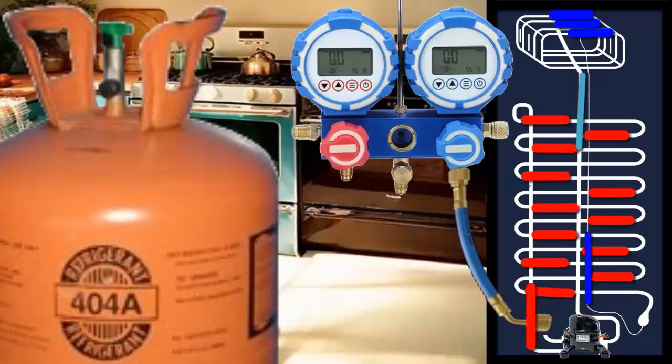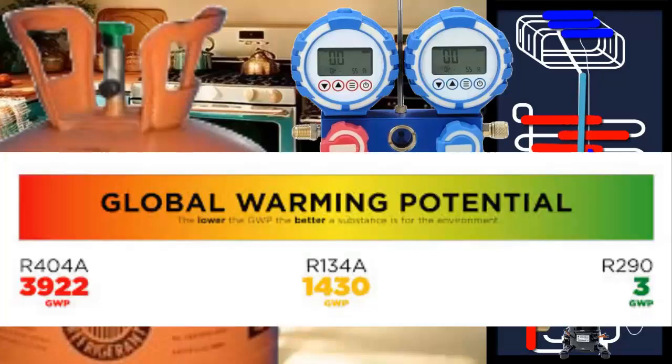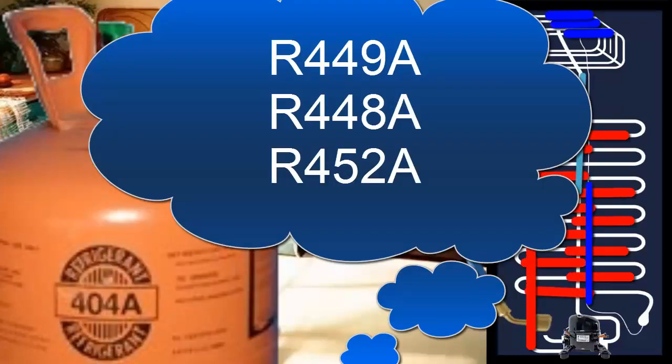The main drawback of R404A is its high global warming potential, close to 3922, which is why it is subject to ecological environmental restrictions. Currently, the most common replacement gases for R404A in equipment that is already in operation are R448A, R452A, and R449A.